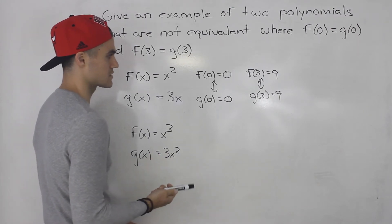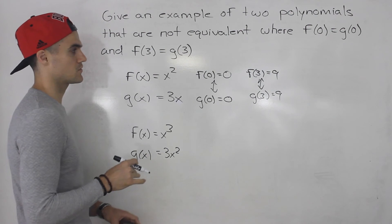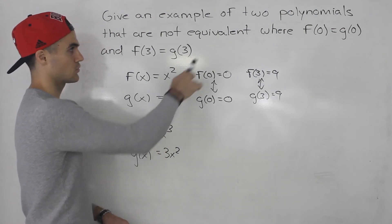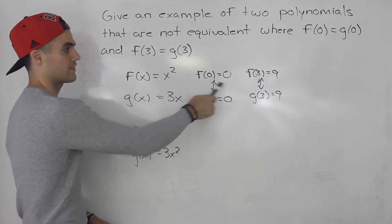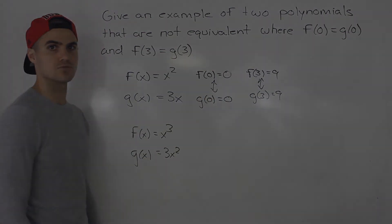Then 3 squared is 9 times 3 is 27, right? So there's multiple ways to do these types of questions. You just have to sort of do trial and error and just make sure whatever conditions they give you that the conditions all hold with whatever polynomials you choose.